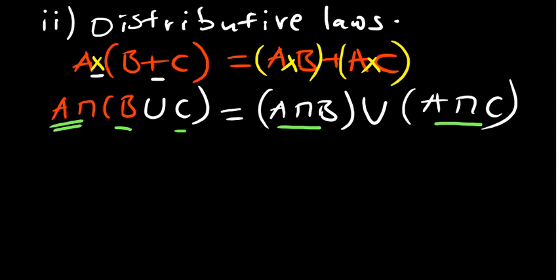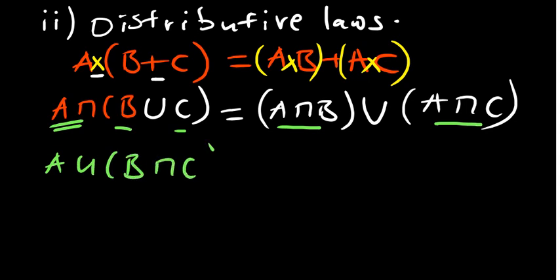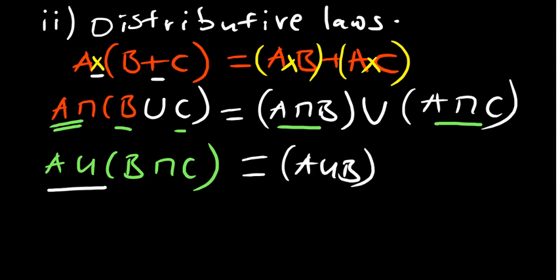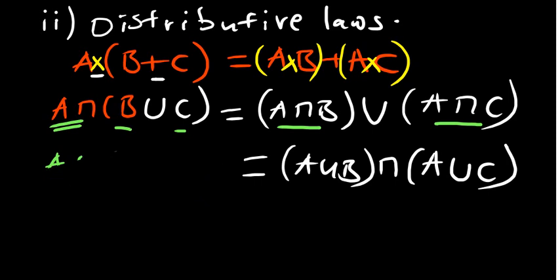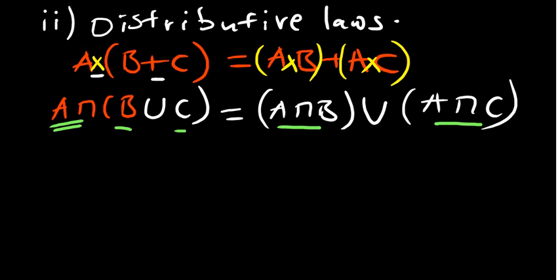The other way you can think about it: multiply A by B to get A intersection B, then multiply A by C to get A intersection C, with union in between. The same works if you start with union: A union B intersection C equals A union B, intersection A union C. These are the two distributive laws.